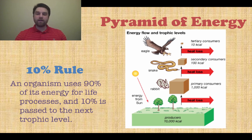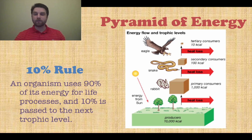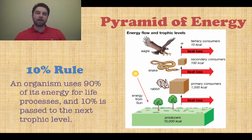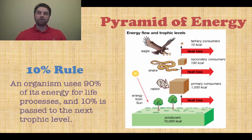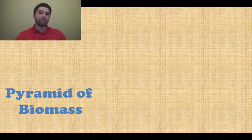For example, if you have 10,000 kilocalories produced by the producers — the grass and trees — when a rabbit eats those, it only gets about 1,000 kilocalories. That 10% rule continues up the chain, so all the way up to the snake and the eagle, the eagle only gets 10 kilocalories from that original 10,000 of the producers.